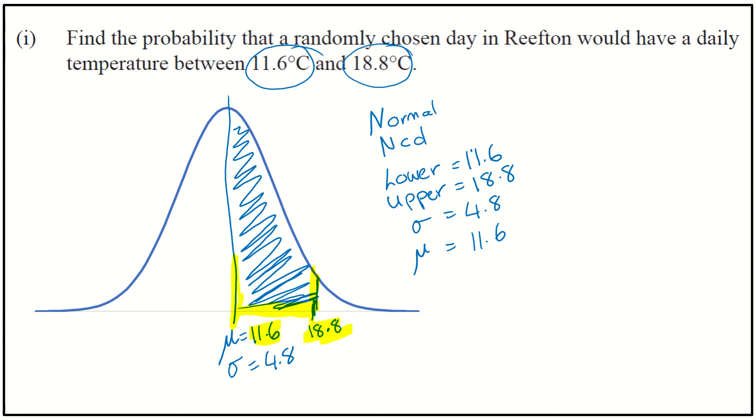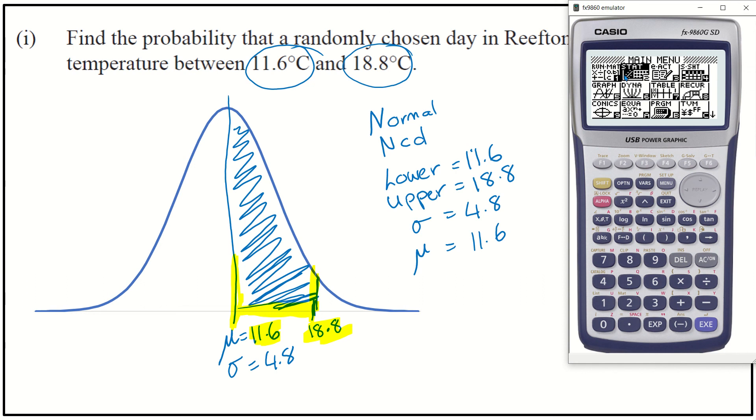I'm going to grab my calculator and go into my stats mode. Then I'm going to do distributions: F5, normal F1, and NCD F2. I've got a lower of 11.6, upper of 18.8, standard deviation of 4.8, and a mean of 11.6. That gives me a probability of 0.4332.